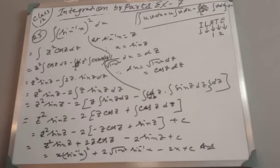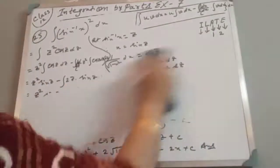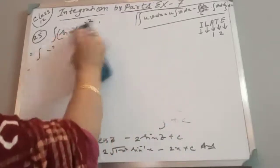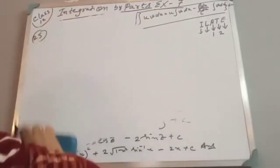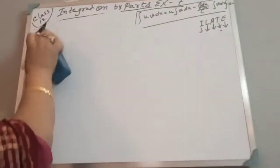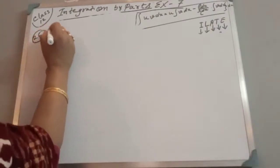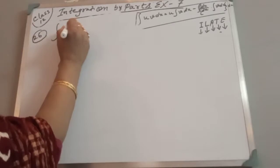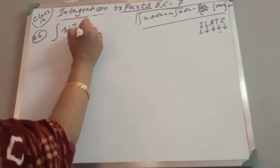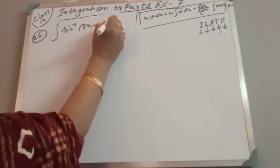That is the answer. Moving to sum number 26. Evaluating the integrand first is very very important before applying the product rule, otherwise it will be difficult. To avoid trouble, just evaluate that part first.